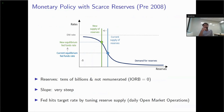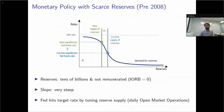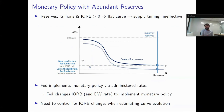Before 2008, reserves were in the tens of billions, not remunerated, and banks had strong incentives to actively trade with each other. The demand curve had a very steep slope, so the Fed could hit the target rate by making small adjustments to reserve supply through open market operations — even a small change implied a sizable change in rates. With abundant reserves in the trillions that are remunerated, banks have lower incentives to trade; the curve becomes flat, so supply tuning isn't effective. The Fed now implements monetary policy by administering rates — changing the interest on reserve balances changes the opportunity cost of holding reserves.